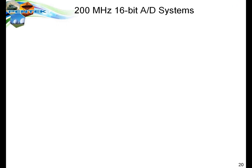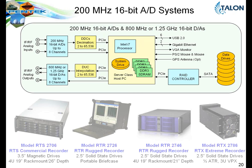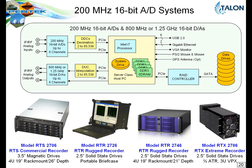We have a lot of different systems available. One class uses 200 MHz 16-bit A-to-Ds and either 800 MHz or 1.25 GHz 16-bit D-to-As. You can have up to eight channels connected in a chassis through the system to a RAID controller, also with digital down converters and digital up converters as part of the signal path. These come in different form factors — commercial, rugged portable, rugged rack-mount — taking exactly the same technology and software and putting it into different form factors for the particular environment.